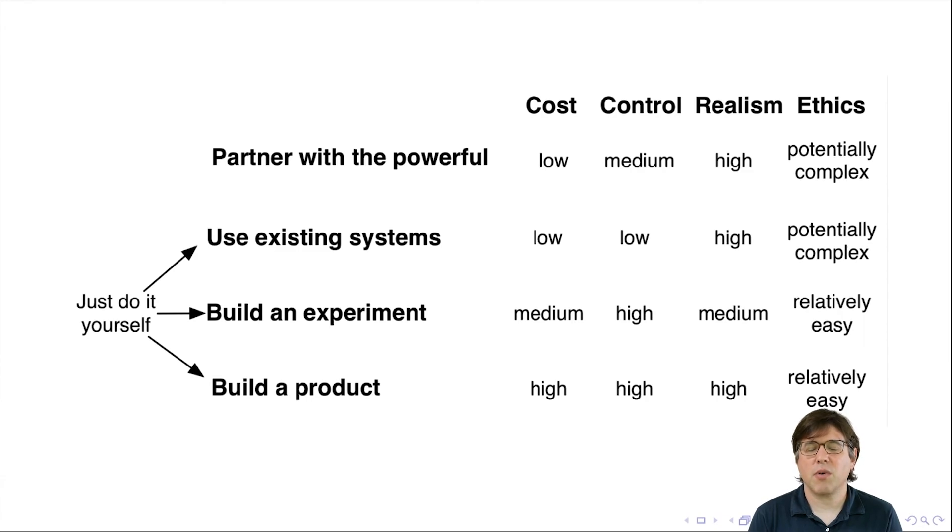And they don't have the extra constraint that you have that you want to make it useful for research. So the cost of building a product are extremely high. The control is also extremely high because you're the boss. You can make it do what you want. The realism is high because you have people participating because they care about the product. And the ethics are relatively easy, again, because you're in total control.